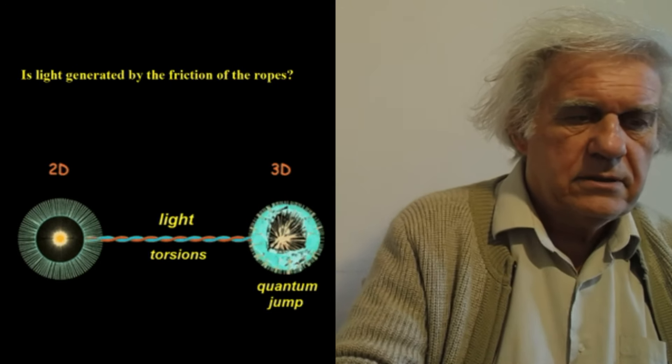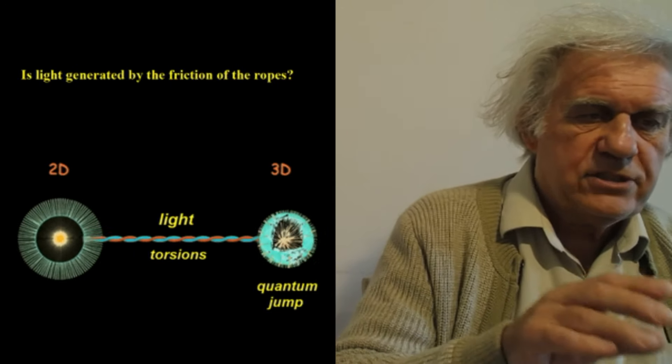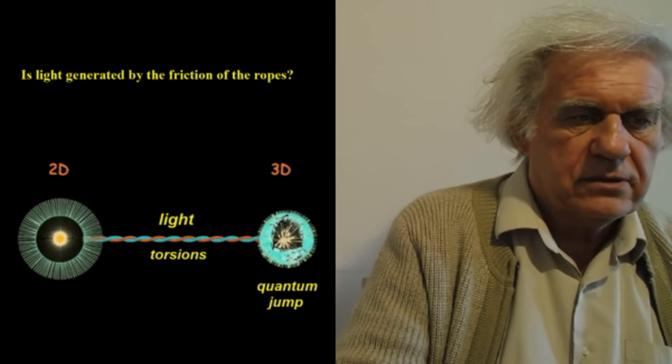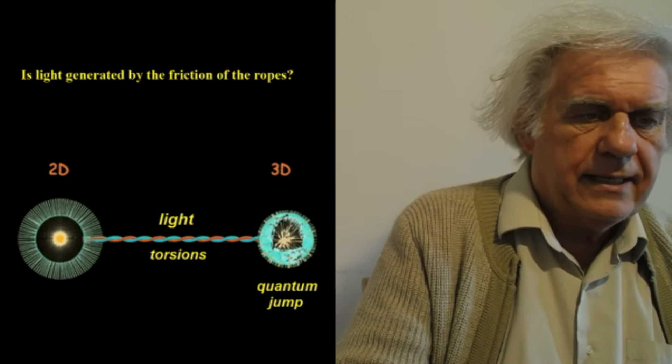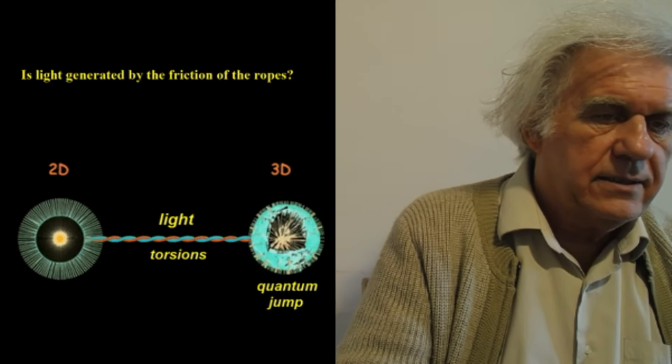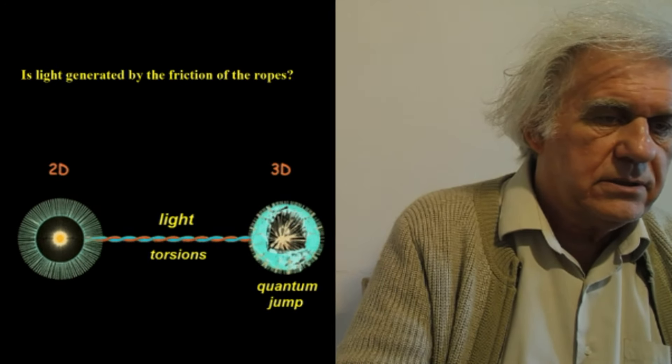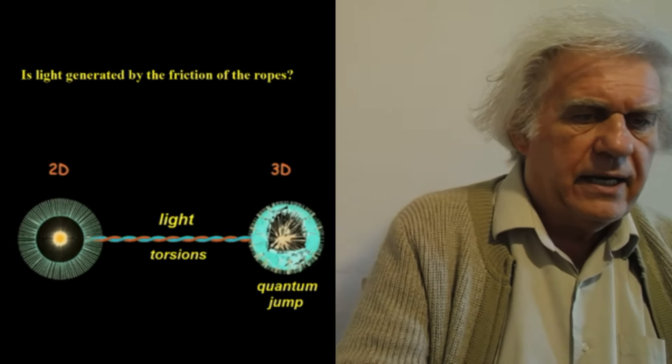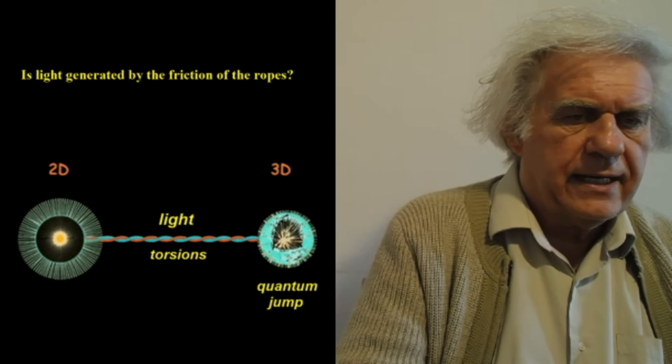So it's torsion, not friction. Is there a tiny friction when the rope torques? I don't know — I would venture to say none. It's like if you have a rope and you torque it, I'm not sure there's any friction between the two threads, which is what he was referring to.